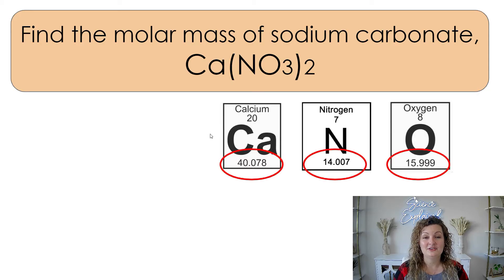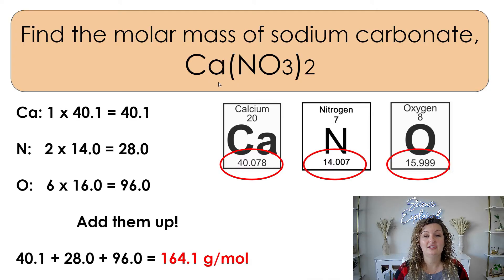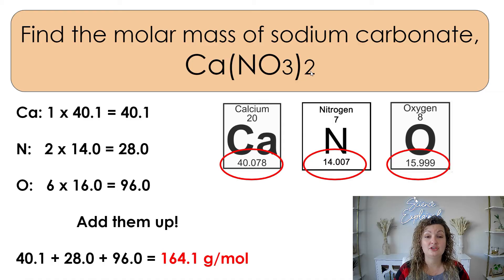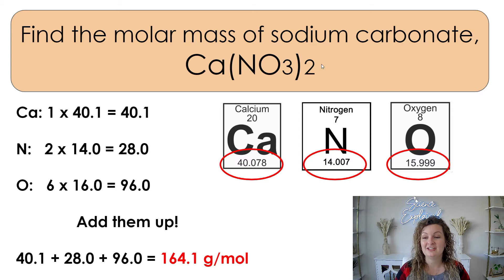All right, let's go ahead and go over the answer. First, locate them on the periodic table, get the masses of each, and then look at your quantities — how many of each one we have. So we have one calcium, one times 40.1. Nitrogen: we have one times two, but remember, if it's in parentheses, we multiply by what's on the outside of the parentheses. So that is two nitrogen multiplied by 14. And oxygen: we have a subscript of three, but it's in parentheses, so two times three is six. We have six oxygen multiplied by 16. Add all of your numbers up and you end up getting 164.1 grams per mole.